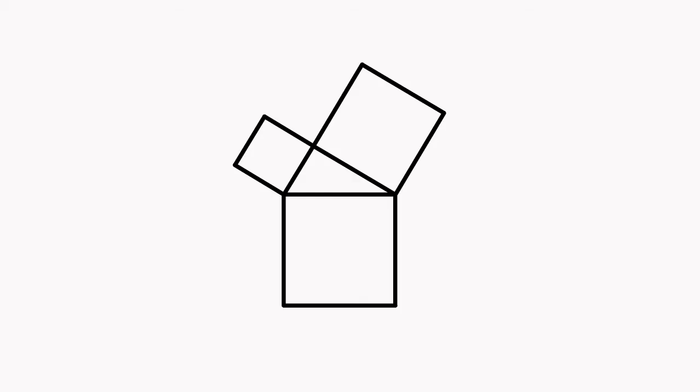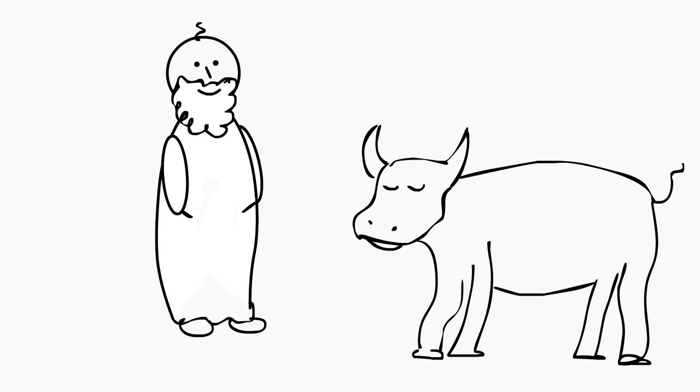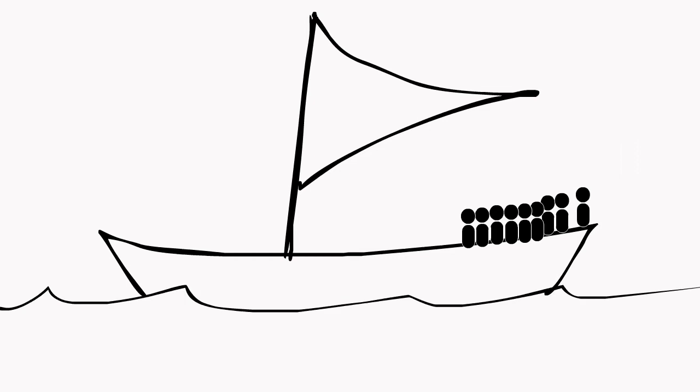When Pythagoras first proved the Pythagorean theorem, it is said that he was so happy that he sacrificed an ox to celebrate the discovery. When it was proved that irrational numbers exist, the person who discovered the proof was thrown off a boat.